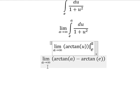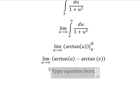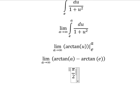When a approaches positive infinity, this goes to positive infinity. Arctan of positive infinity gives us pi over 2, minus arctan of e.